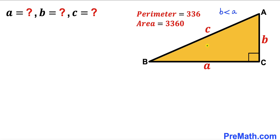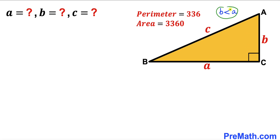Welcome to pre-math. In this video we have got a right triangle ABC such that its hypotenuse is represented by lowercase c, its base side is represented by lowercase a, and side AC is represented by lowercase b. Keep in mind that side length b is less than a.